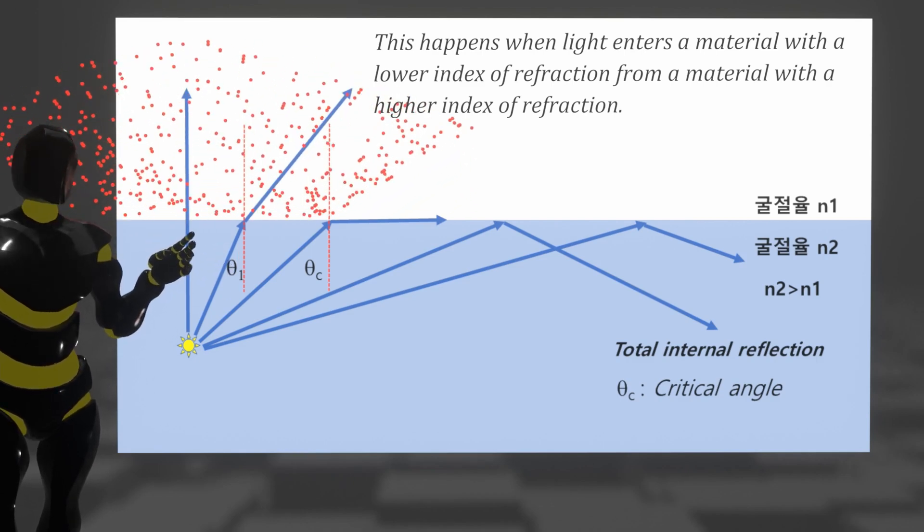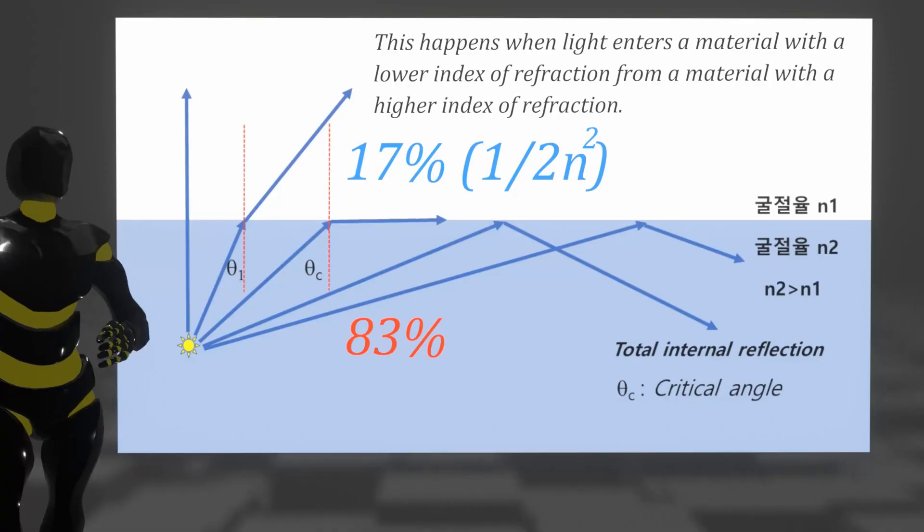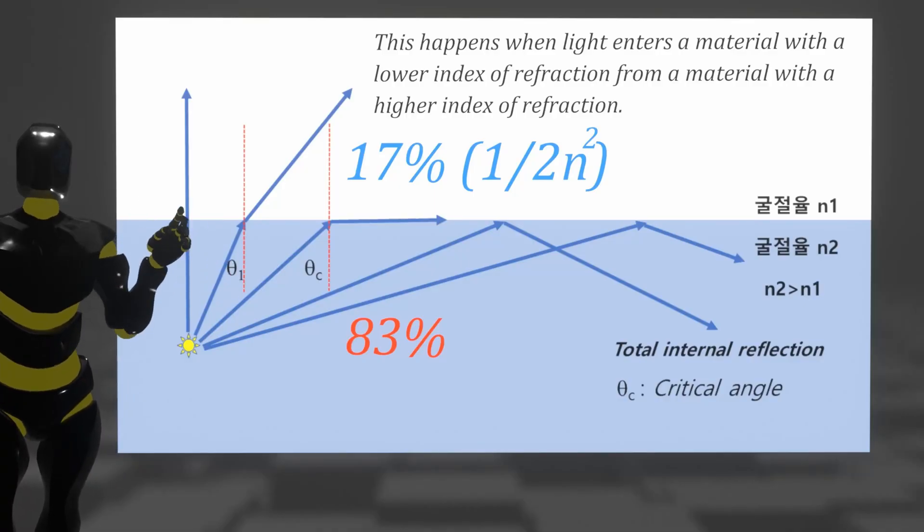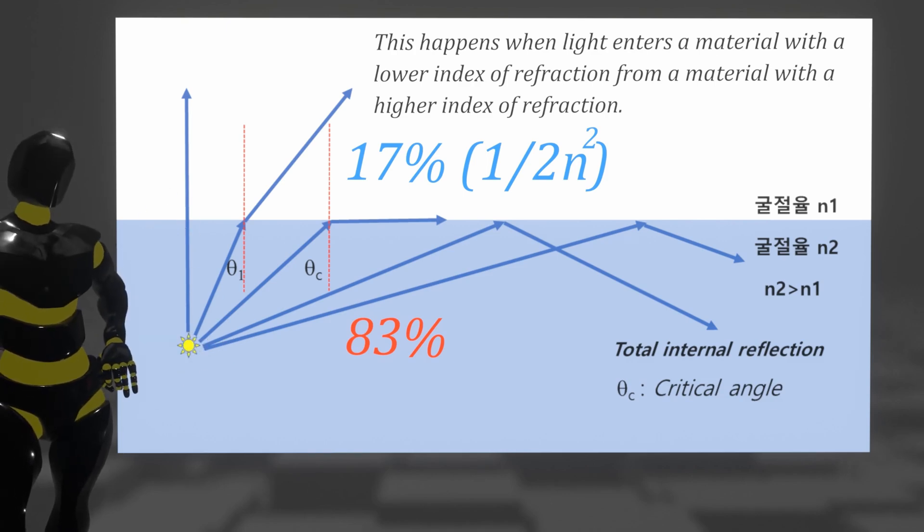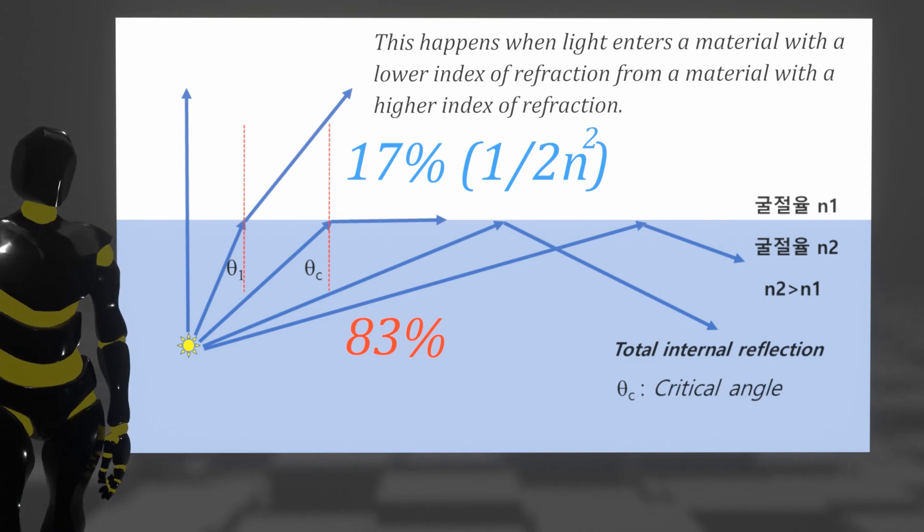More precisely, only light within the critical angle is emitted into the air. And the ratio of light emitted into the air among optically generated light is 1 over 2n², where n is the refractive index of the material from which the light is generated.